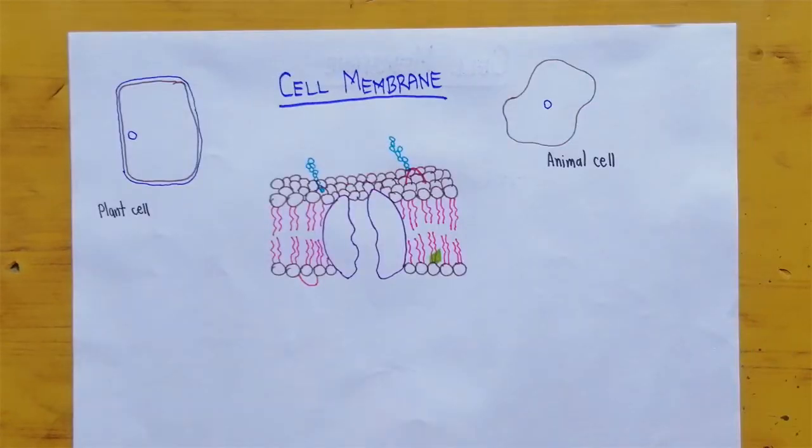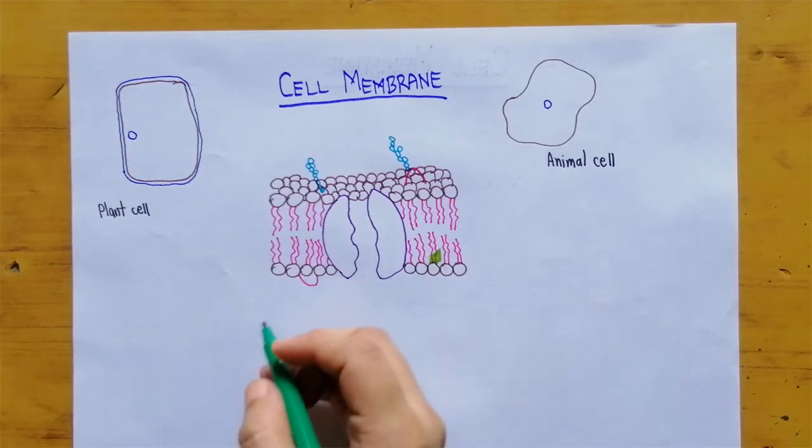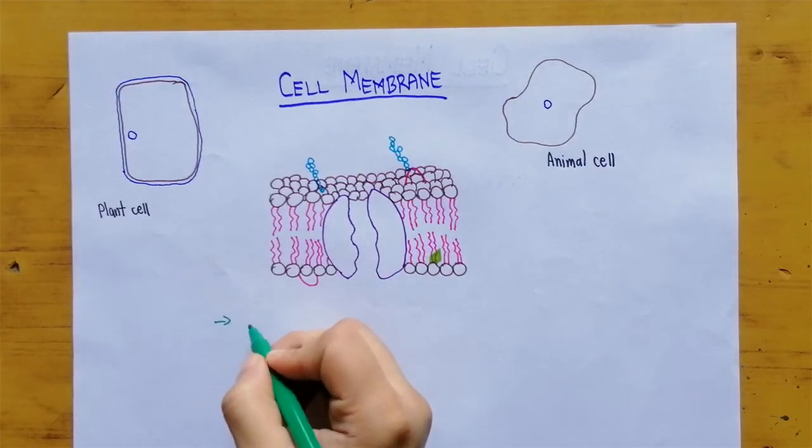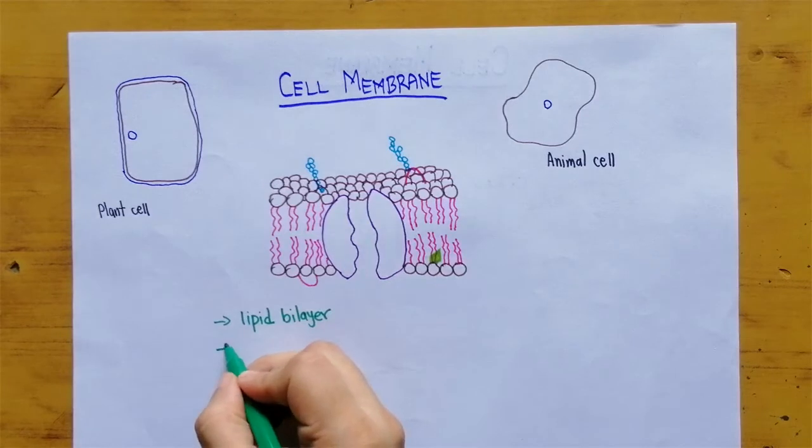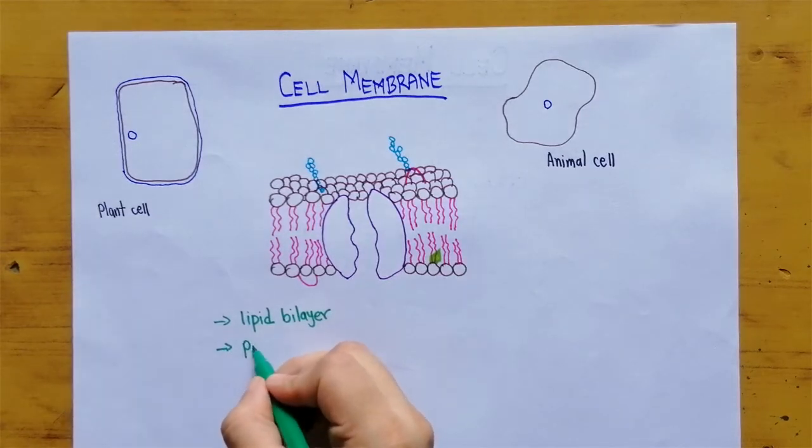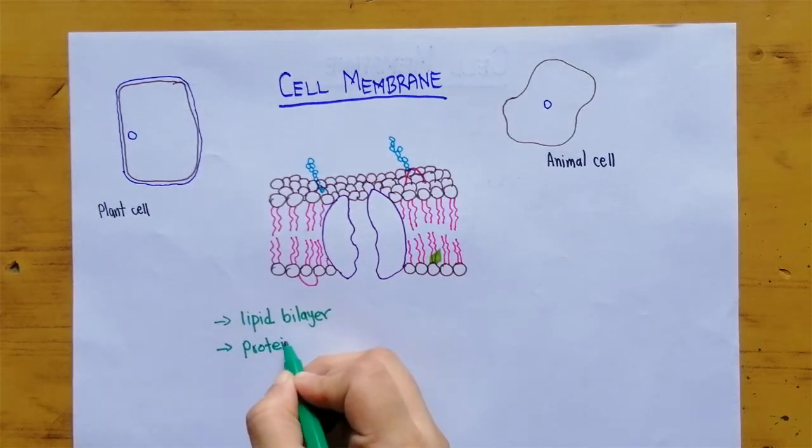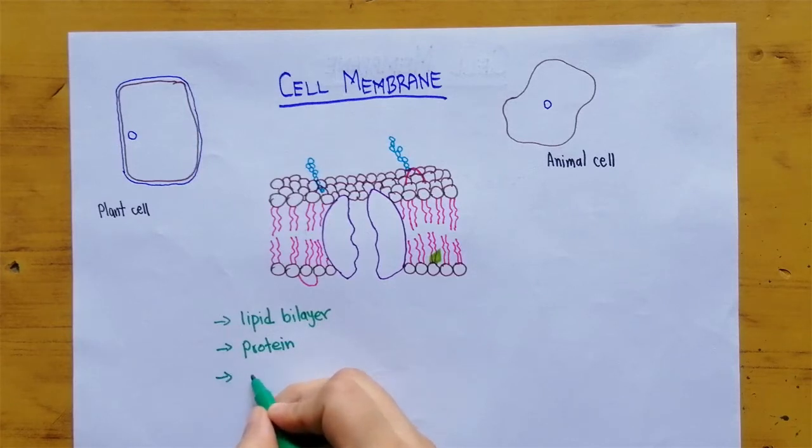The structure of cell membrane. Cell membrane is made up of lipid bilayer. It is made up of protein. And it is also made up of small amount of carbohydrates.